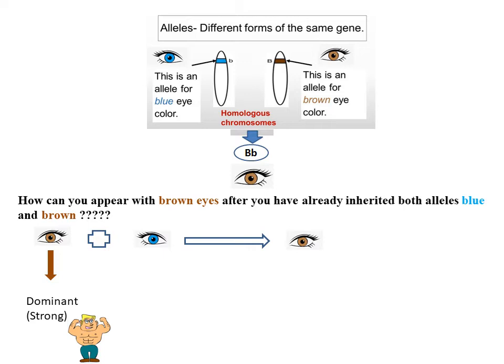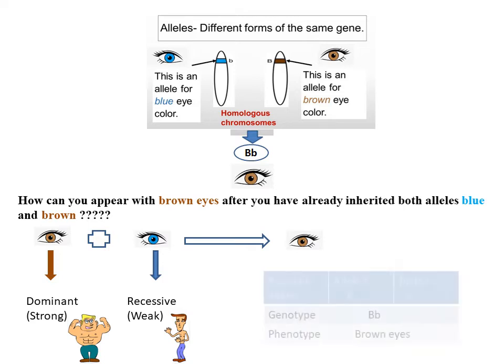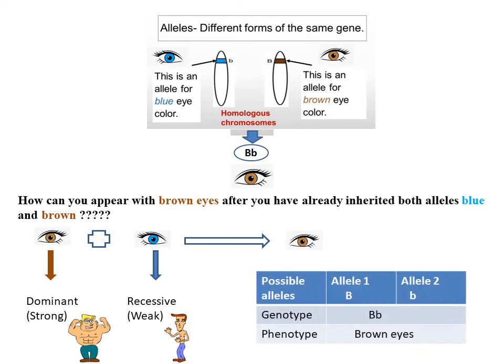Why? Because the brown allele is dominant — it's strong — while the second one, which is blue, is recessive and masked. So the genotype of this baby, or the bear, possesses two alleles: capital B and small b, which are responsible for brown color and blue color. Then the phenotype is brown.